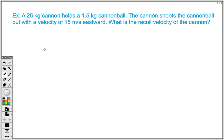Another physics lesson with Mr. M. Today we're going to be taking a look at another conservation of momentum problem. In this case it's going to be the exploding type. We're going to have a 25 kg cannon that holds a 1.5 kg cannonball. The cannon shoots the cannonball out with a velocity of 15 m per second eastward. We want to know what is the recoil velocity of the cannon.